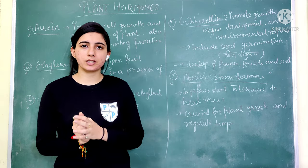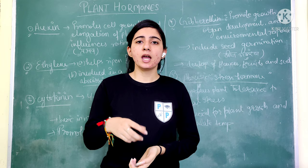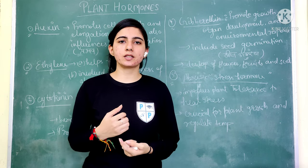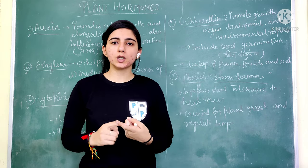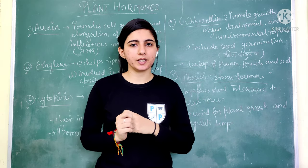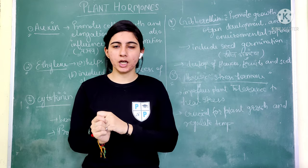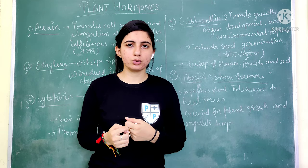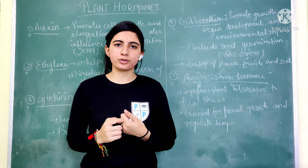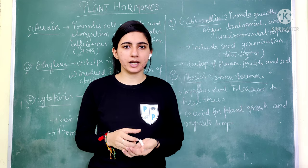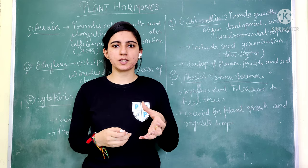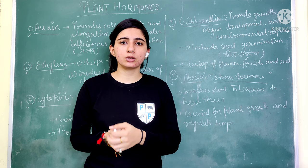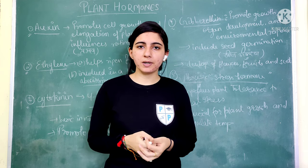It is the same in our plants. There are many hormones that are useful for growth and development. Because plants are autotrophs — they make their own food in the presence of sunlight through the process of photosynthesis.